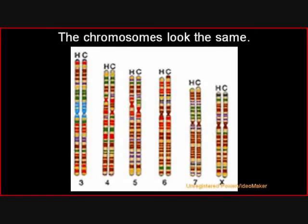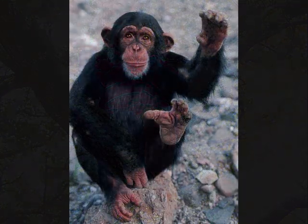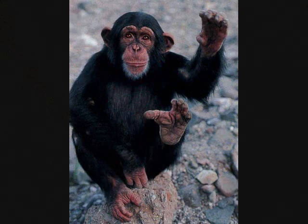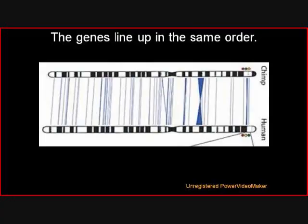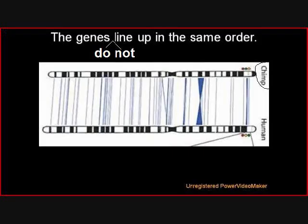There are some striking similarities between chimpanzees and humans. The chromosomes look the same — well, they kind of do. Very, very similar, but not exactly the same. But then CDK7 says the genes line up in the same order, when actually, they don't.